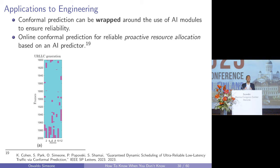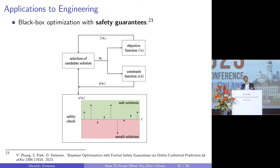Another application is black-box optimization using Bayesian optimization. Bayesian optimization optimizes black-box functions by tracking uncertainty on the function. When there are safety constraints, you don't want to attempt too many unsafe solutions. One way to ensure this is to put an online conformal prediction loop on top of conventional Bayesian optimization.